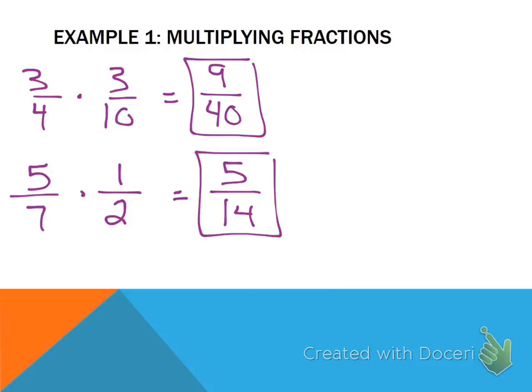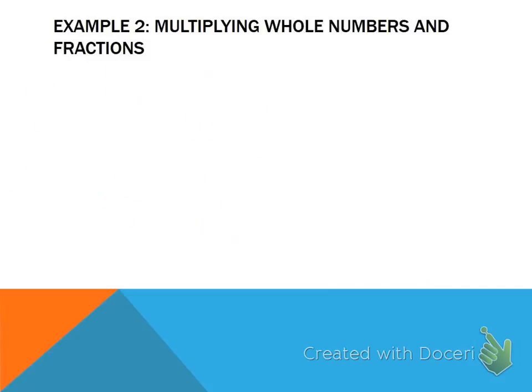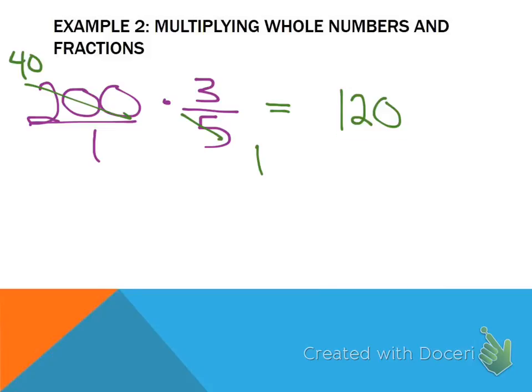So now in example 2, now I'm multiplying whole numbers times fractions. And here I'm looking for opportunities to cross reduce. So I have 200 times 3 fifths. Anytime I'm multiplying a fraction by a whole number, I'm going to place it over 1. That visually gives me a very clear indication these are my numerators and these are my denominators. Now, is there anything that I could cross reduce? 5 and 200 because they can both be reduced by what factor? By 5. So 5 goes into 5 one time, and then 200 divided by 5 is 40. So 40 times 3 is 120 over 1, which is just 120. So multiplying by whole numbers, we always want to look for the opportunity to cross reduce.